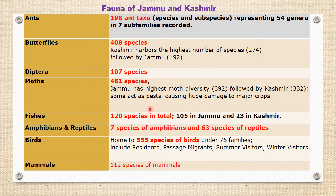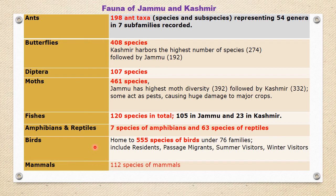Some act as pests, causing huge damage to major crops. As far as fishes are concerned, we have 120 species in total from both Jammu and Kashmir, among them 105 from Jammu and 23 from Kashmir. We have seven species of amphibians and 66 species of reptiles in Jammu and Kashmir. In case of birds, J&K is home to 555 species of birds under 76 families.